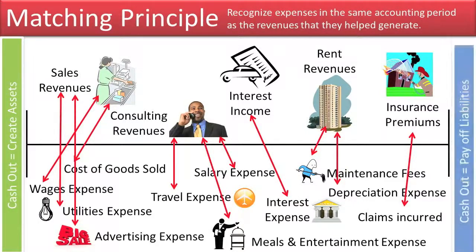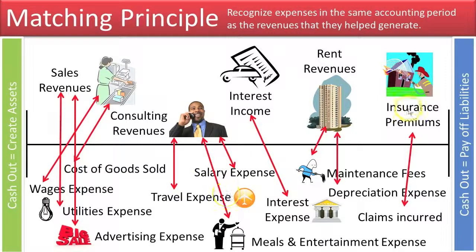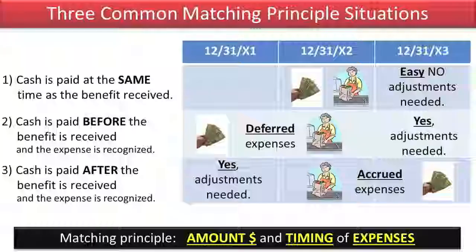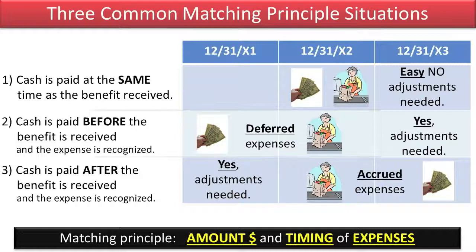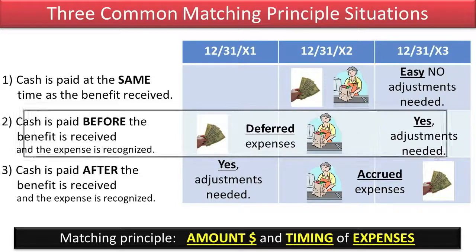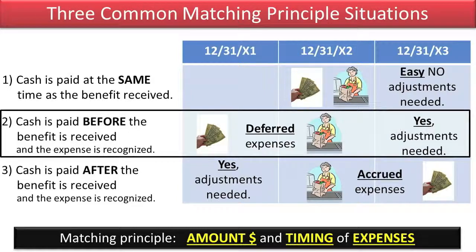Now, if we pay after the fact — so we receive the benefit of these expenses in this period but we pay later — that would generate a liability. That would be an accrued expense, or some type of payable. The one that we're going to focus on in this topic is when cash is paid before the benefit is received and the expense is recognized. These are deferred expenses.